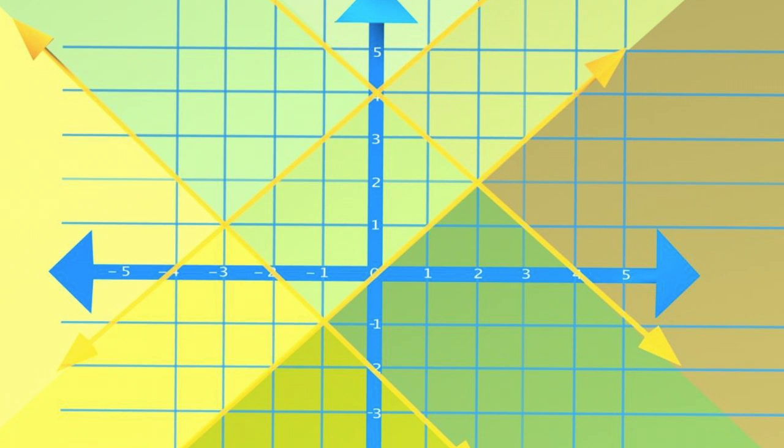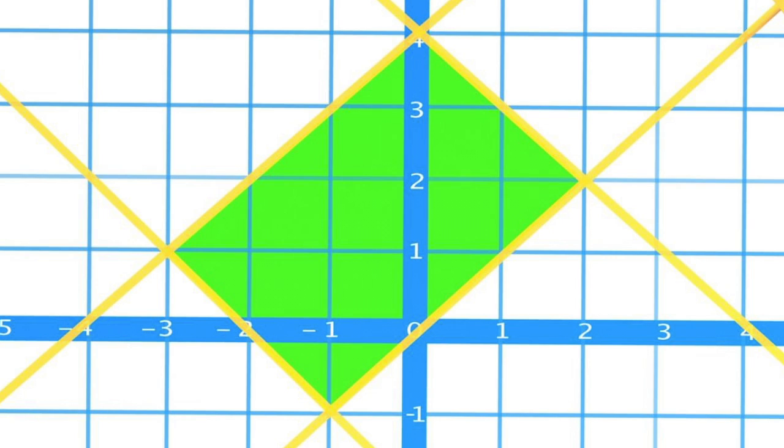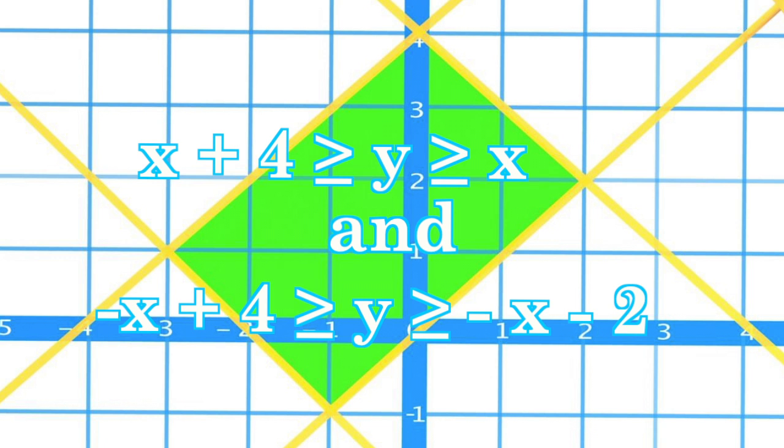And let's look at the shaded region where all four of these lines overlap. In this region we have a rectangle, and we can represent all the points on this rectangle by using the equation for these four lines.